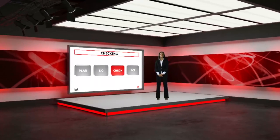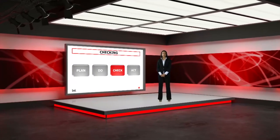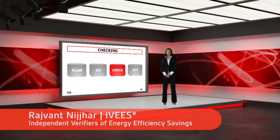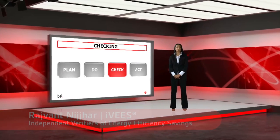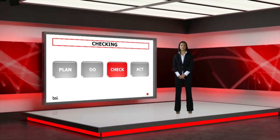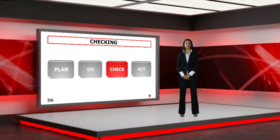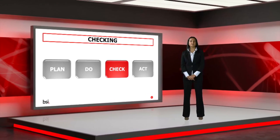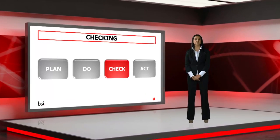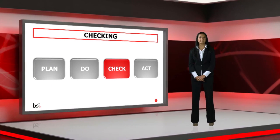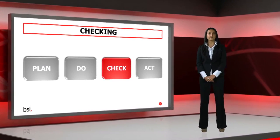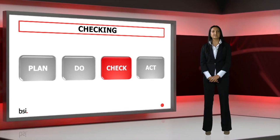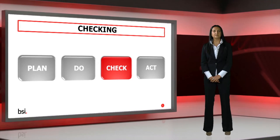We have now covered the first two sections of the Plan, Do, Check, Act cycle. By this point, you'll have hopefully implemented measures as identified in the action plan and to within your timescale in order to achieve your targets. The next part of the process is checking, which means demonstrating that you've actually made the improvements and met your planned targets.